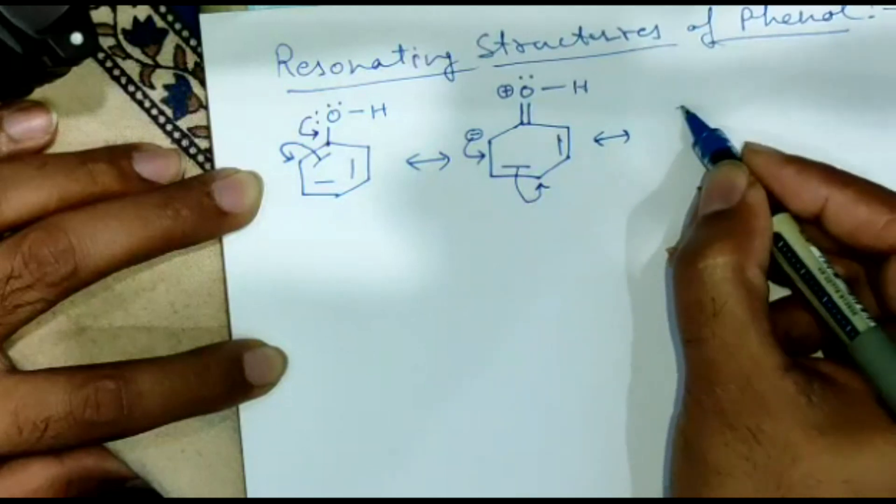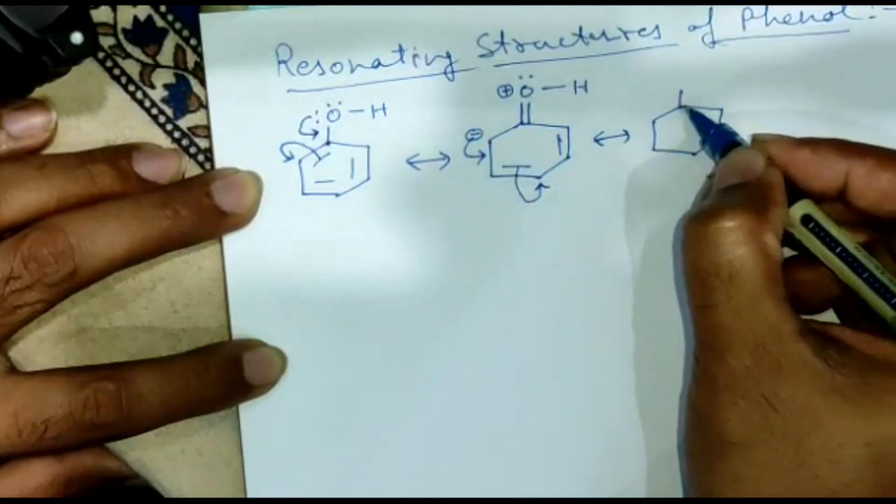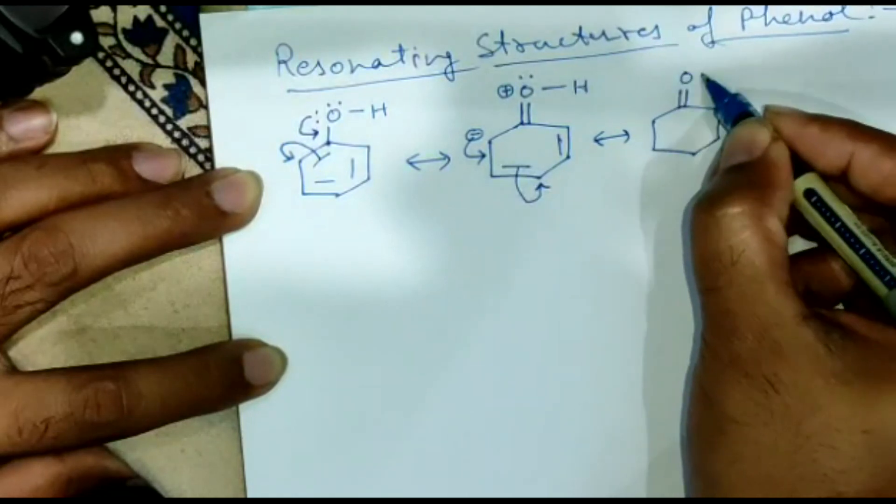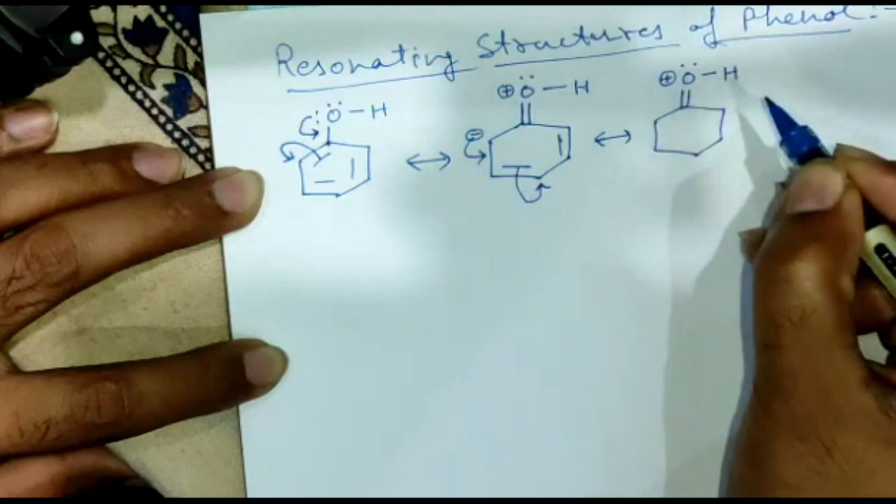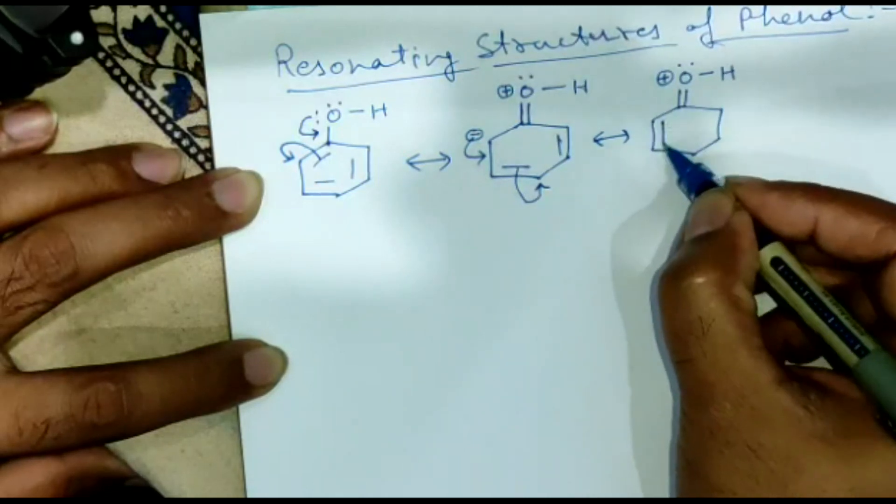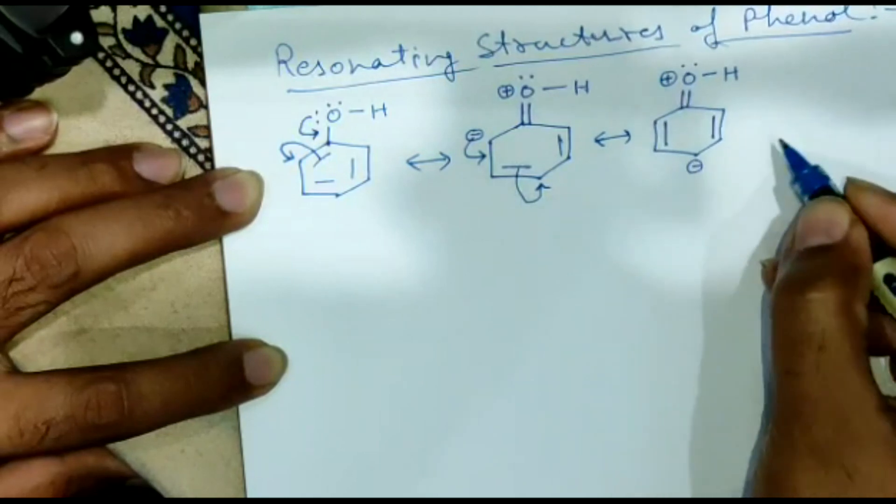And we'll draw the next structure like this with a single lone pair on oxygen and a positive charge, and here comes a double bond. Here is already double bond and a negative charge at this para position.